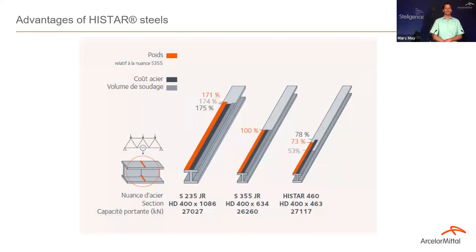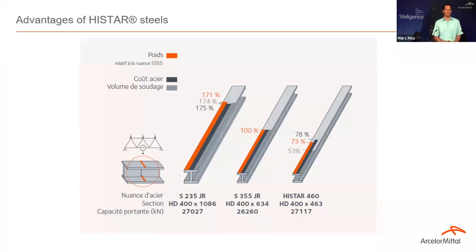We can also demonstrate this for a truss chord in tension. We investigated a case where the tension chord was fully spliced. Because of the smaller material, much less weld volume is needed — the weld volume can be reduced to 53%. With reduced weld volume, welding time is reduced proportionally. Histar 460 has the additional benefit that no preheating is required, saving further time. The overall cost of the solution is much cheaper than the initial one.